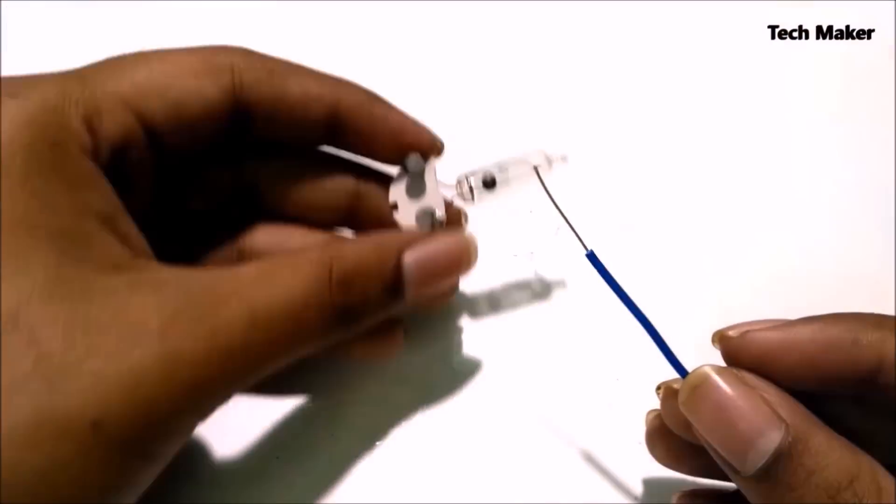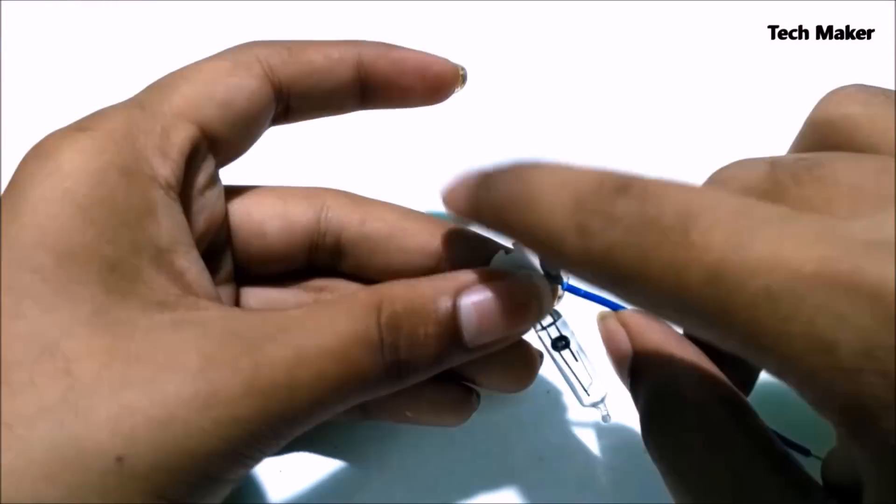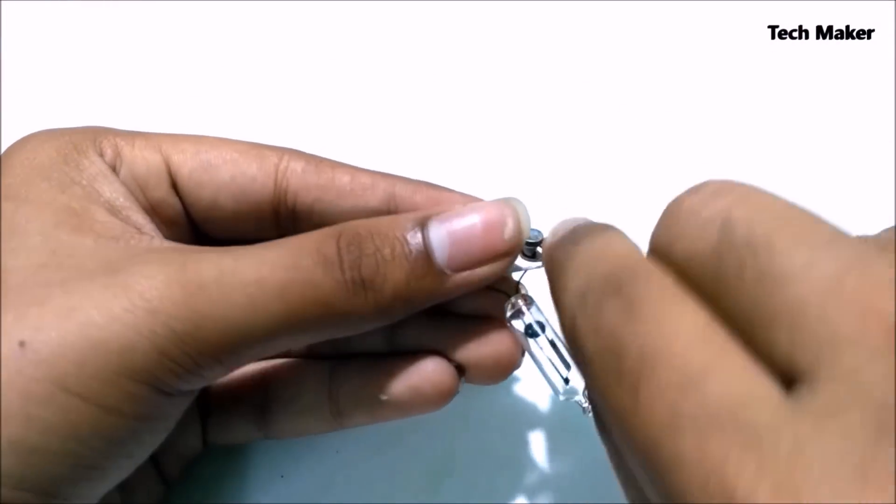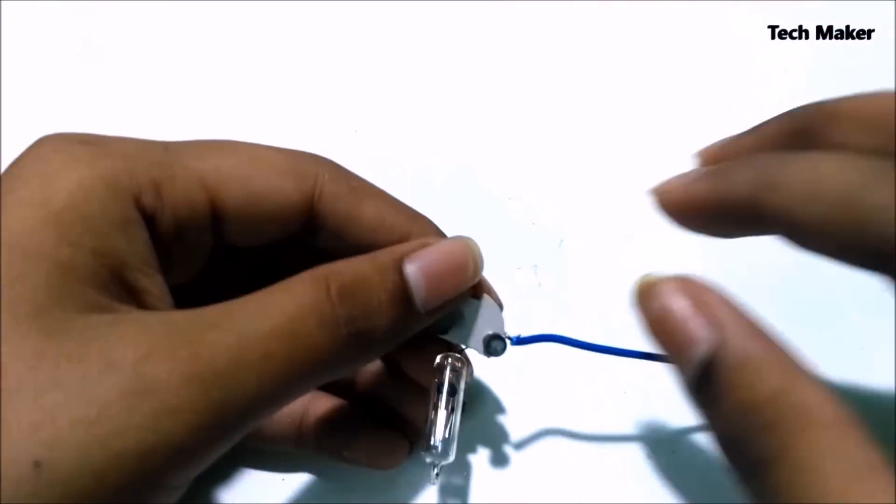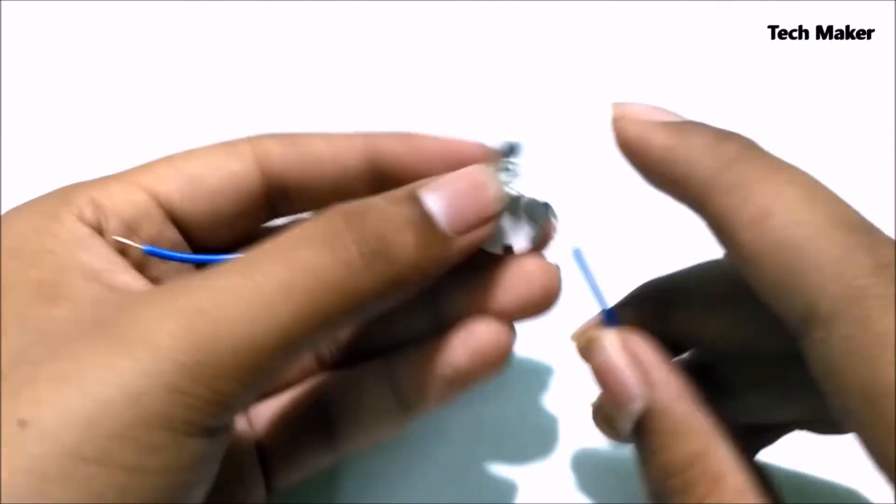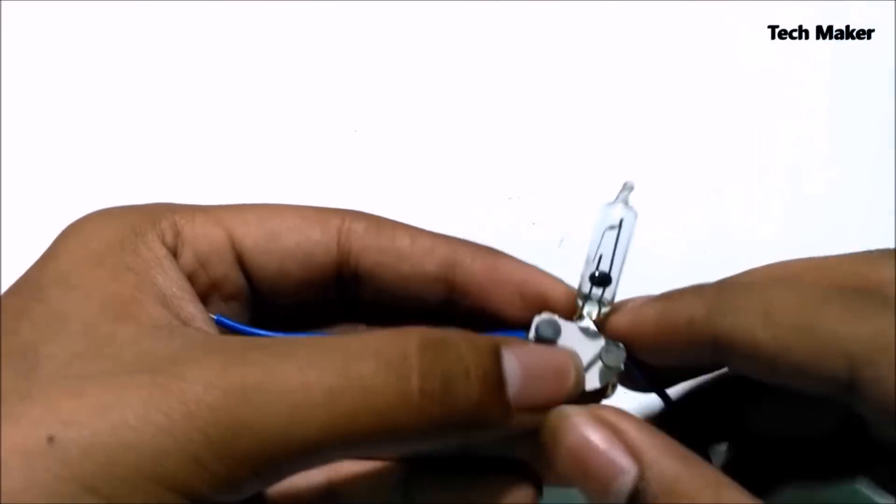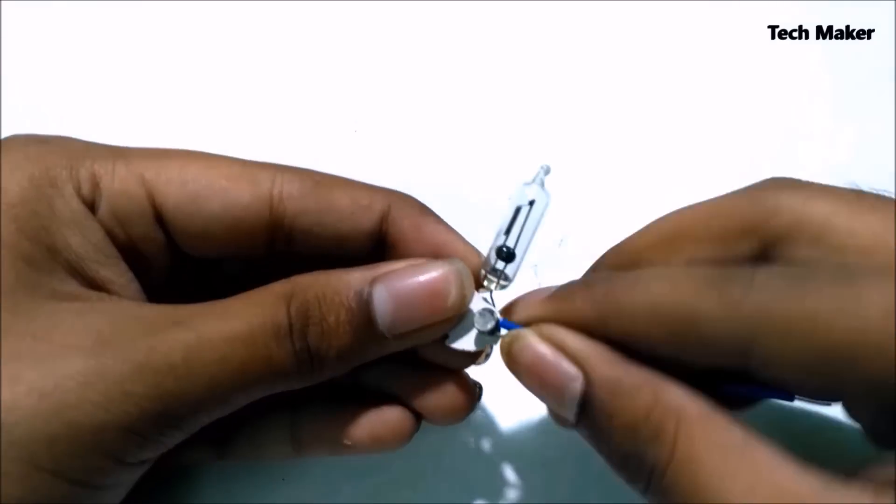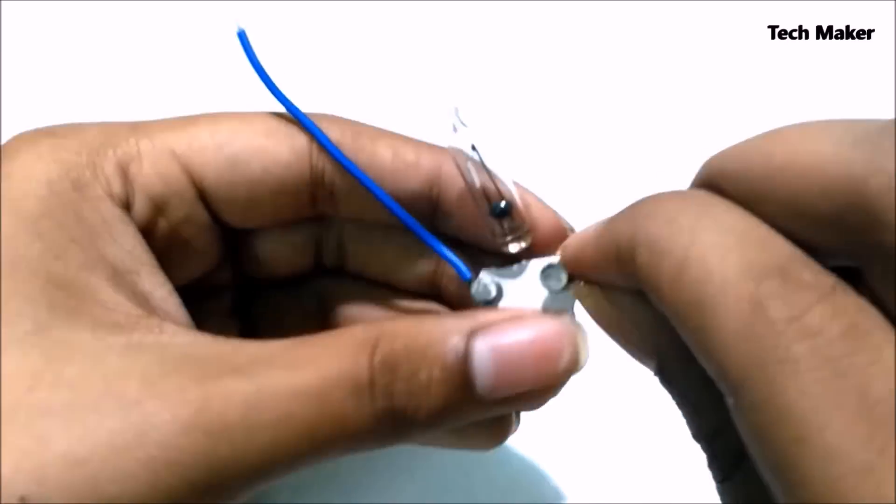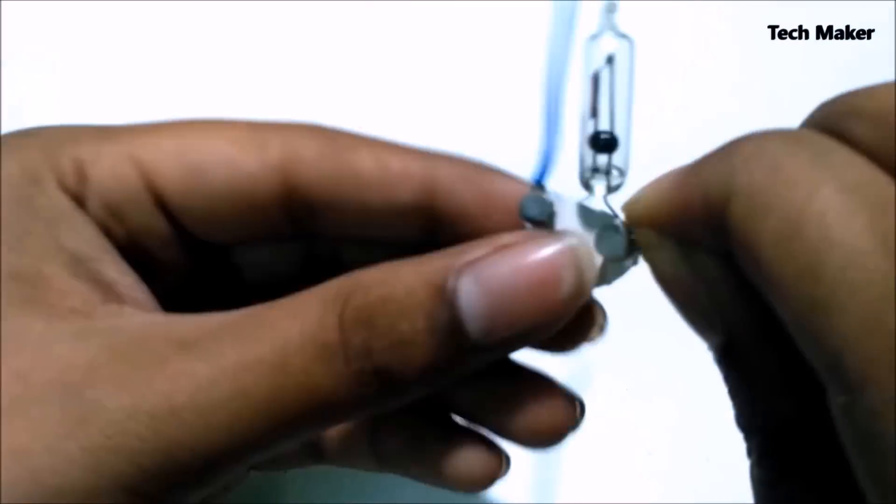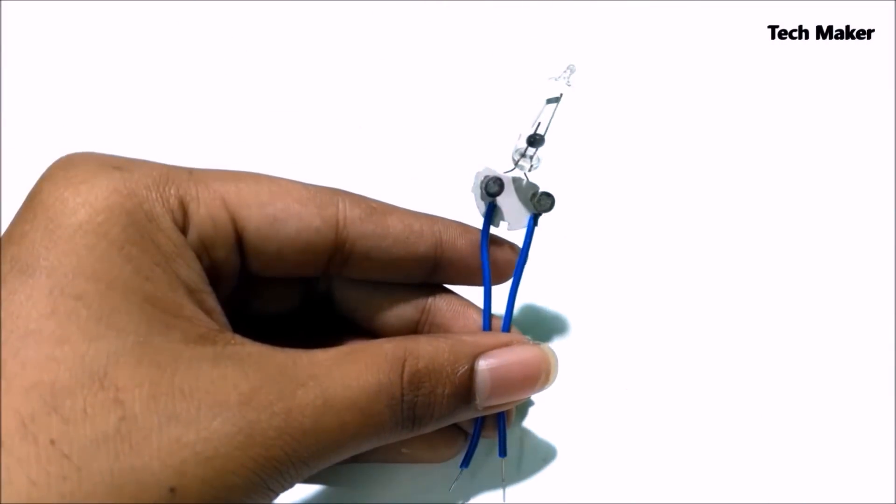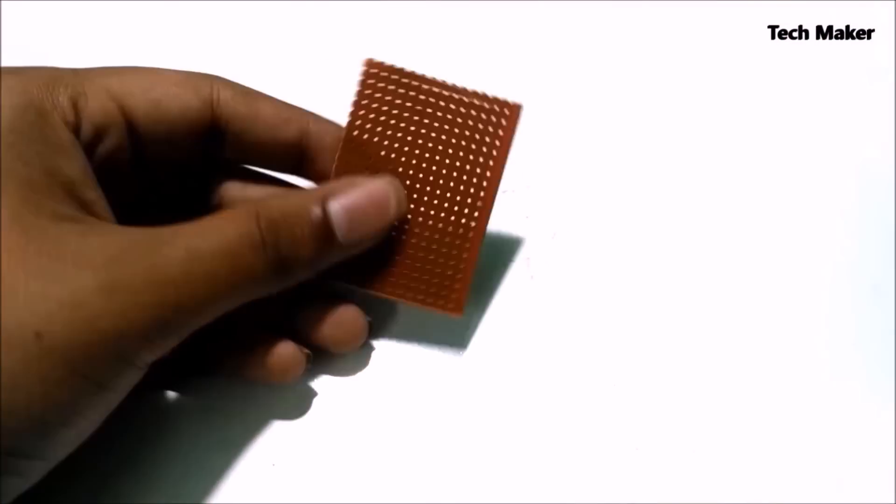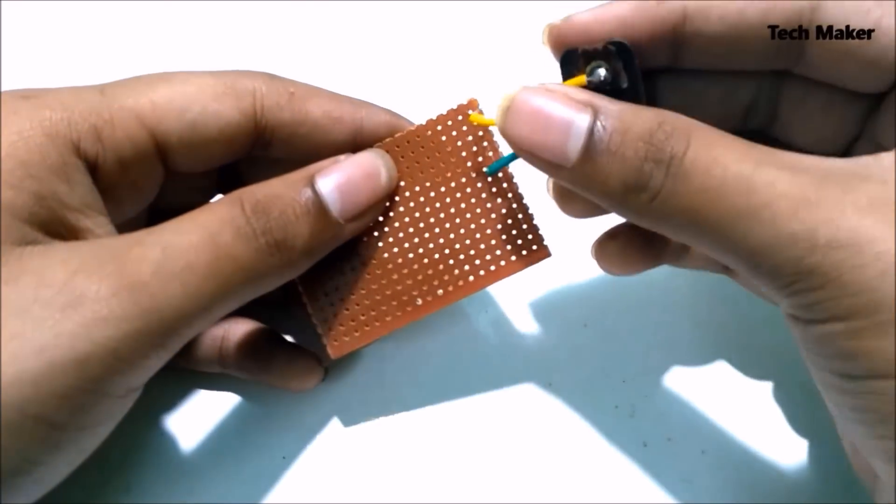Take hookup wire and connect it to these starter terminals. Now take PCB, place all the components on it according to the circuit.